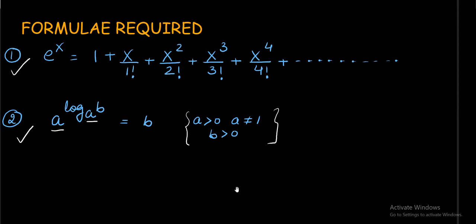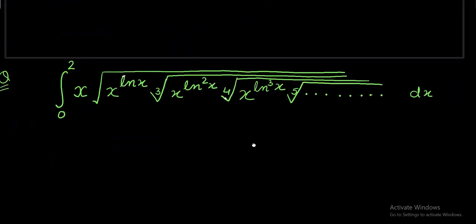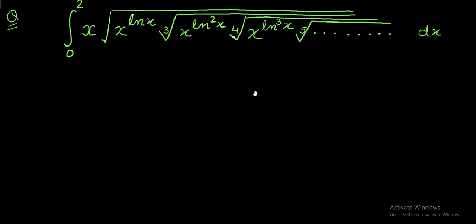Now let us see what exactly that problem is. The question says that we have to integrate 0 to 2 x under root of x power ln x, cube root of x power ln square x, fourth root of x power ln cube x and so on till infinity dx.